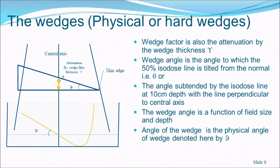Next, we discuss wedges — mainly the physical wedge, also called the hard wedge. Soft wedges are also available today under names like dynamic wedge, virtual wedge, and motorized wedge. Physical wedges are still used with cobalt units and even with linear accelerators. When a physical wedge is introduced in the path of the beam, there is attenuation of radiation — greater attenuation on the thicker side and less on the thinner side.